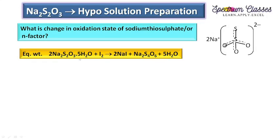First you have to write the redox reaction for which you want to prepare the solution. Here I want to prepare the sodium thiosulfate solution in which iodine is involved. So first I have to write the equation of sodium thiosulfate with iodine. On reaction with iodine, sodium thiosulfate forms Na₂S₄O₆.